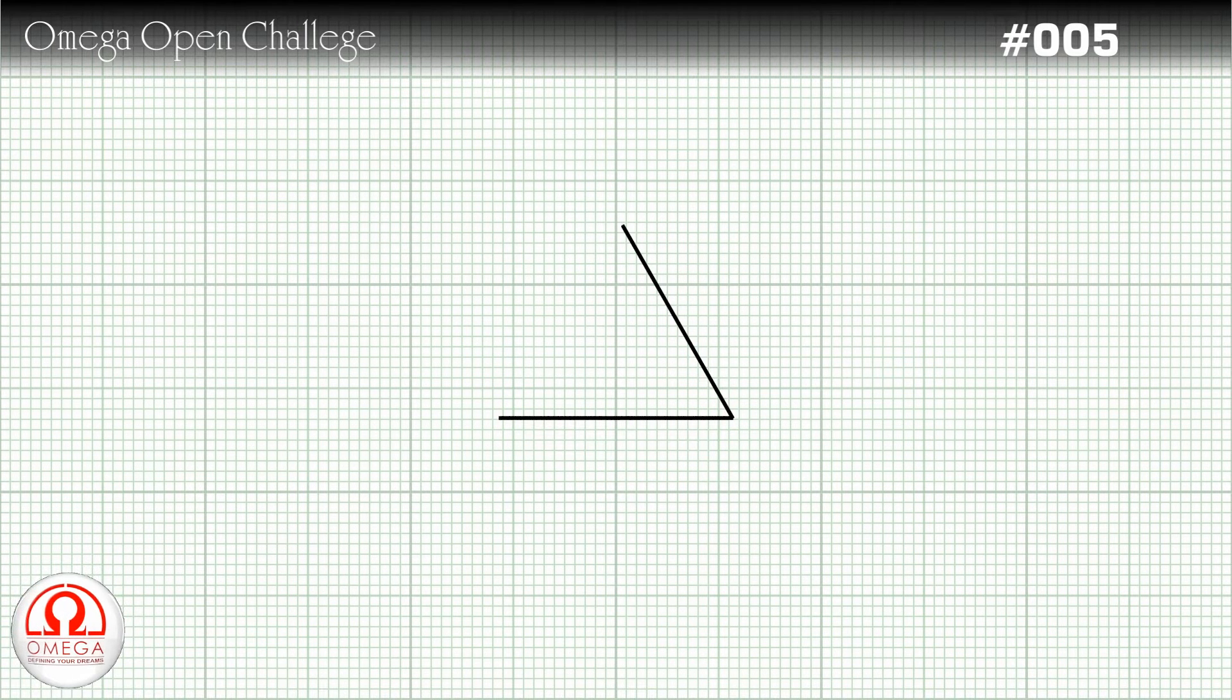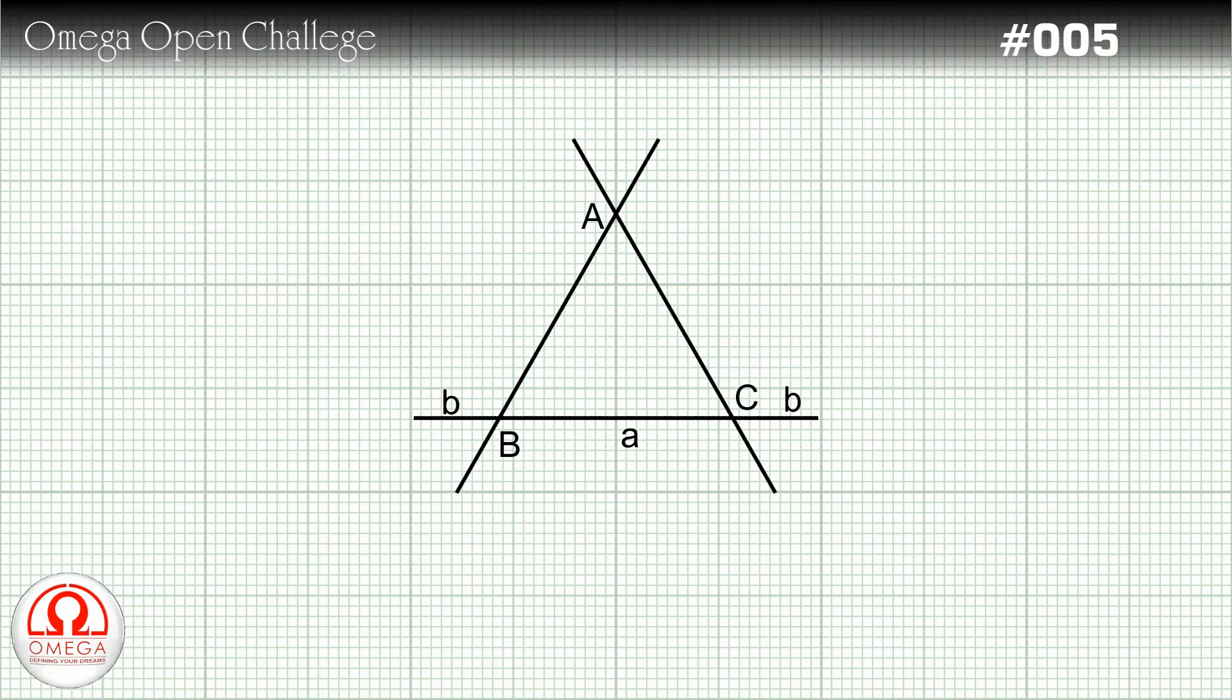Let us draw an equilateral triangle ABC of side A. Extend all the sides by distance B on both sides. With center at A and radius B, draw an arc joining both the extended sides. With center A and radius A plus B, draw another arc as shown. Repeat the same with vertices B and C.